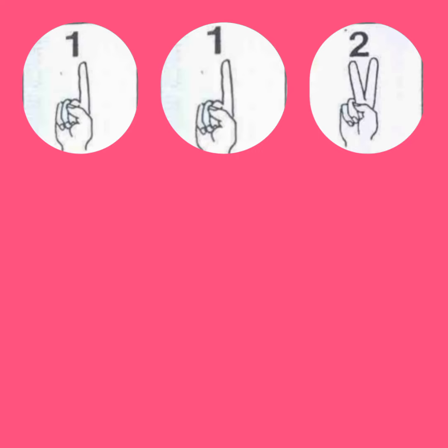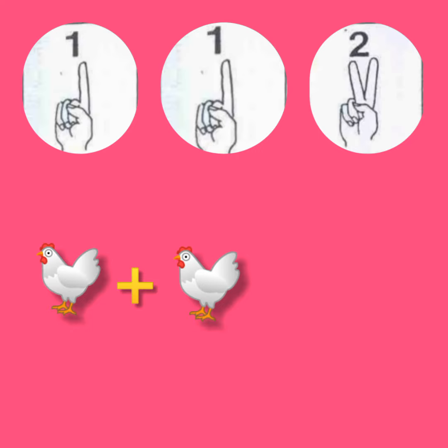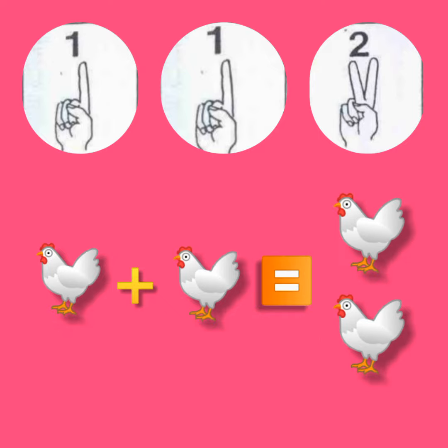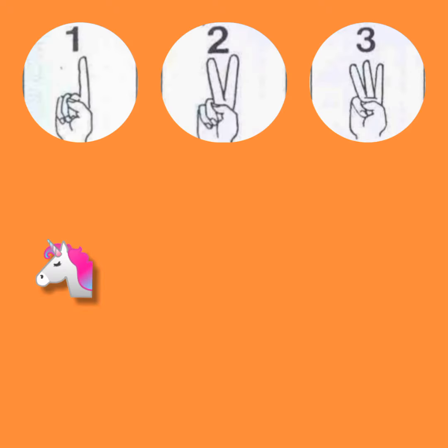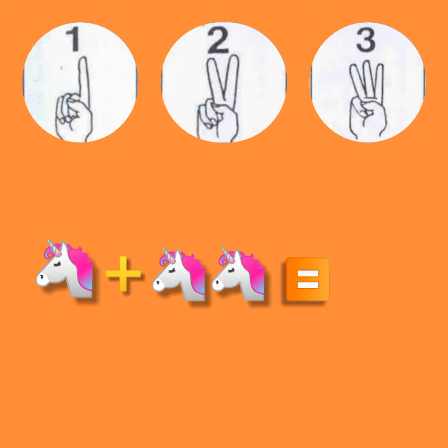Question number one. One unicorn plus two unicorns equal to three unicorns.